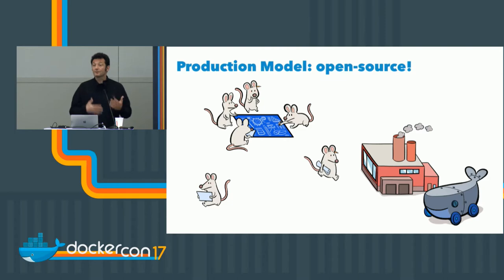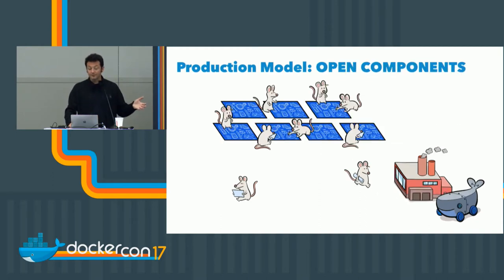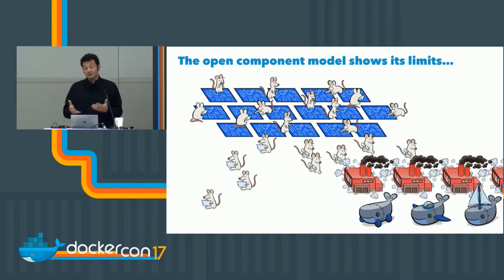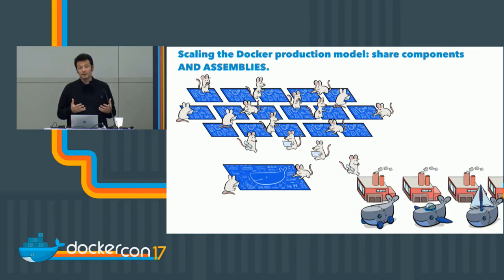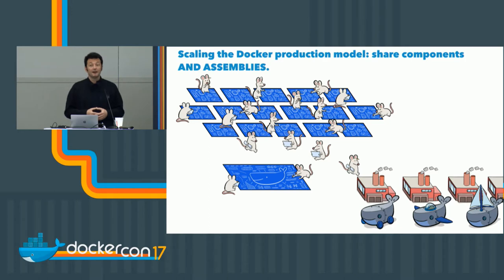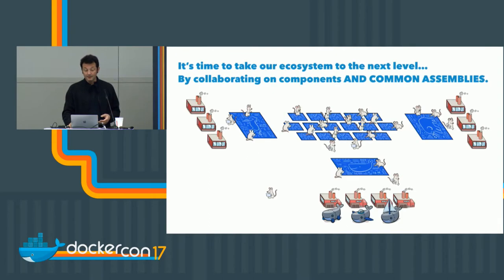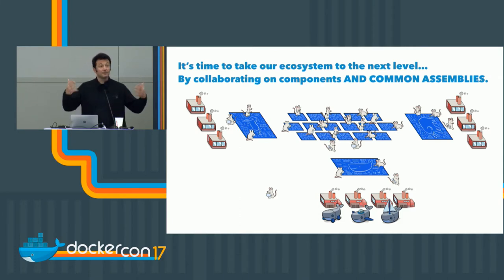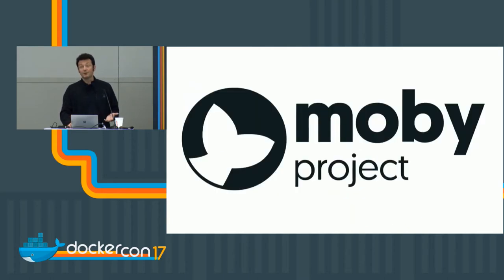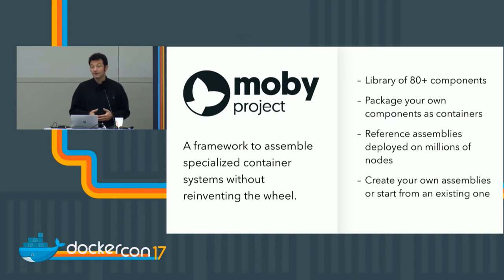Our open source production model evolved from a single monolithic open source codebase to collaborating on components. It showed its limits when we started doing editions by bringing Docker beyond Linux. We found that a good area of collaboration between different teams was the notion of an assembly — assembling common components that all editions can reuse. We built tooling and a framework around that called Moby. Salomon open sourced Moby the other day, and we think Moby can help the ecosystem go to the next level of growth to build container systems. It's the most important open source project Docker has created since the original.